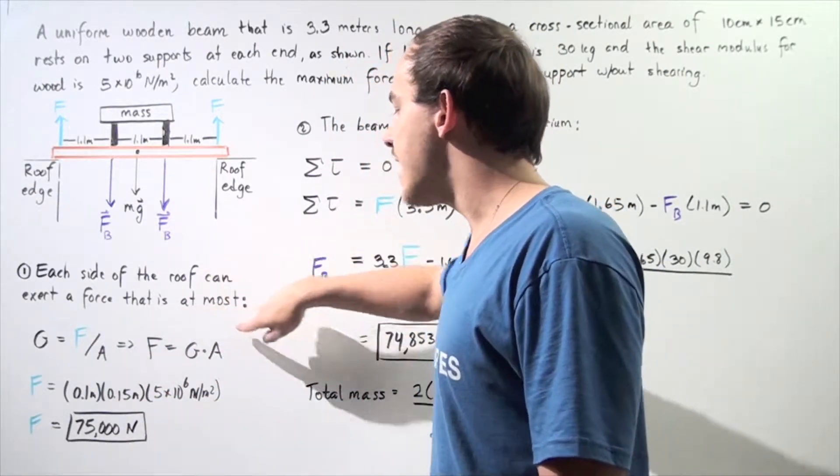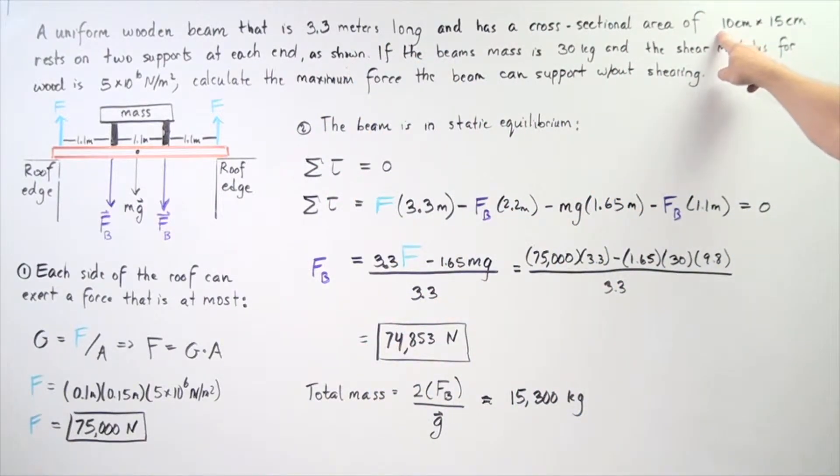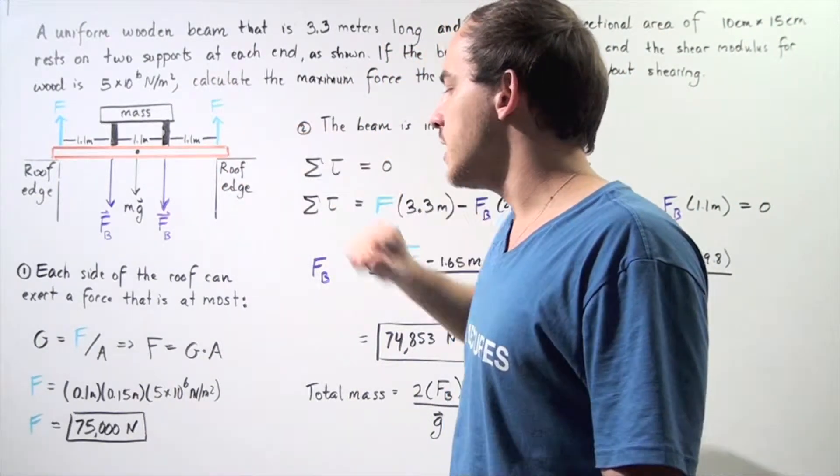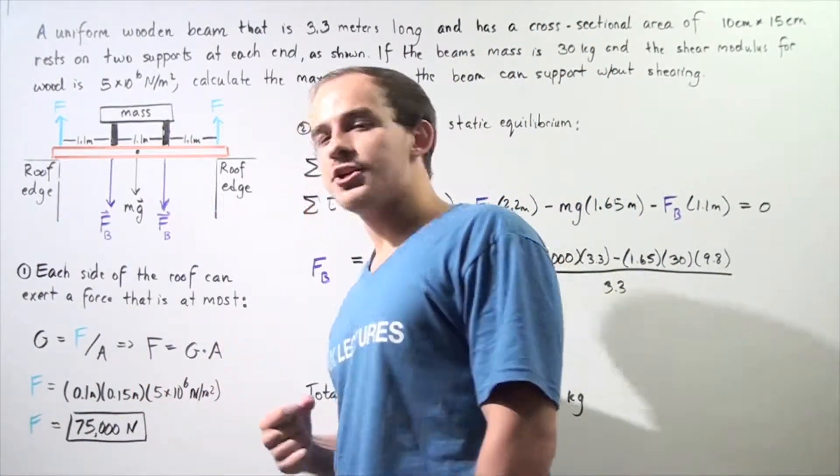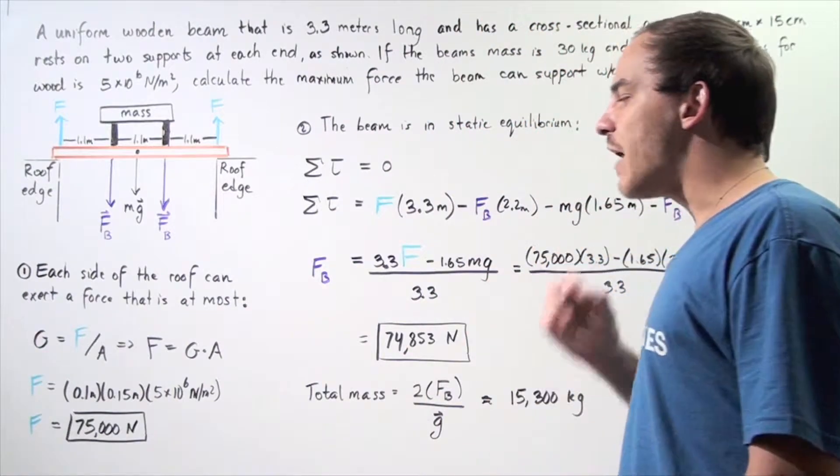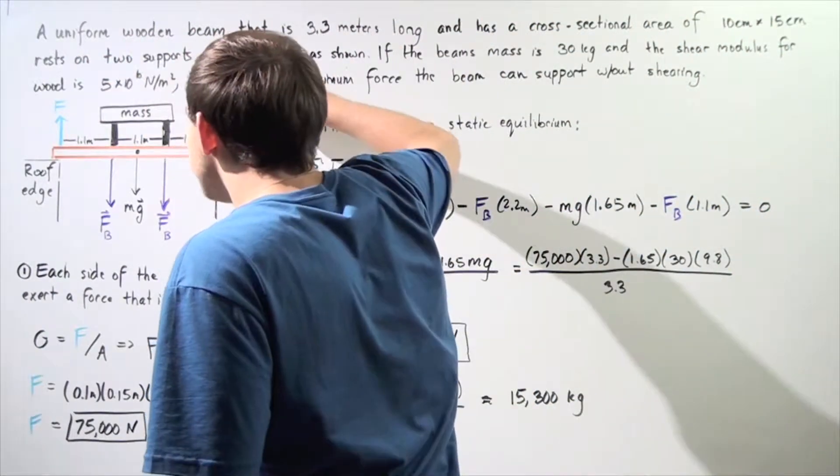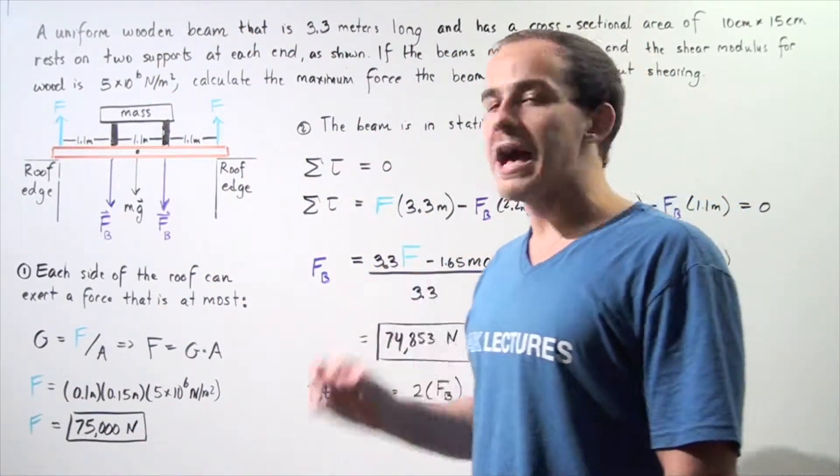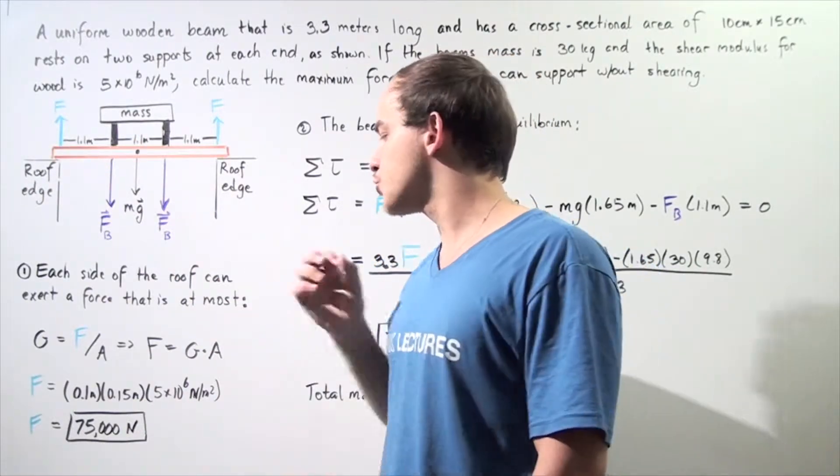Force is equal to g times a. So, a is simply 0.1 meter times 0.15 meters. That's the area of our beam, the cross-sectional area of the beam. And we take that and multiply by the shear modulus, and we get 75,000 newtons. So, each one of these forces can be a maximum of 75,000 newtons. If the force is higher, the beam will break under shear stress.